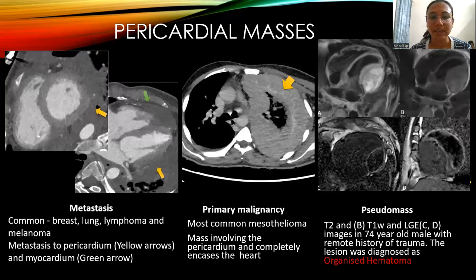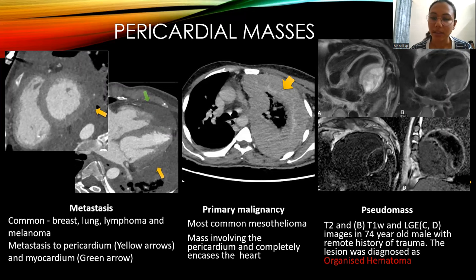Primary malignancy: the most common is mesothelioma, presenting as a mass involving the pericardium and completely encasing the heart. Pseudomass: T2, T1, and gadolinium-enhanced images in a 74-year-old male with a remote history of trauma are shown; the lesion was diagnosed as an organized hematoma.